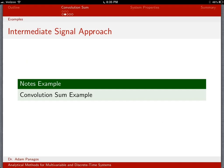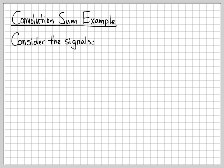The first thing we want to do is just do a simple example where we have very short signals where we can just explicitly evaluate the convolution sum on a term by term basis. So let's start off with a really simple example and think about the following signals.